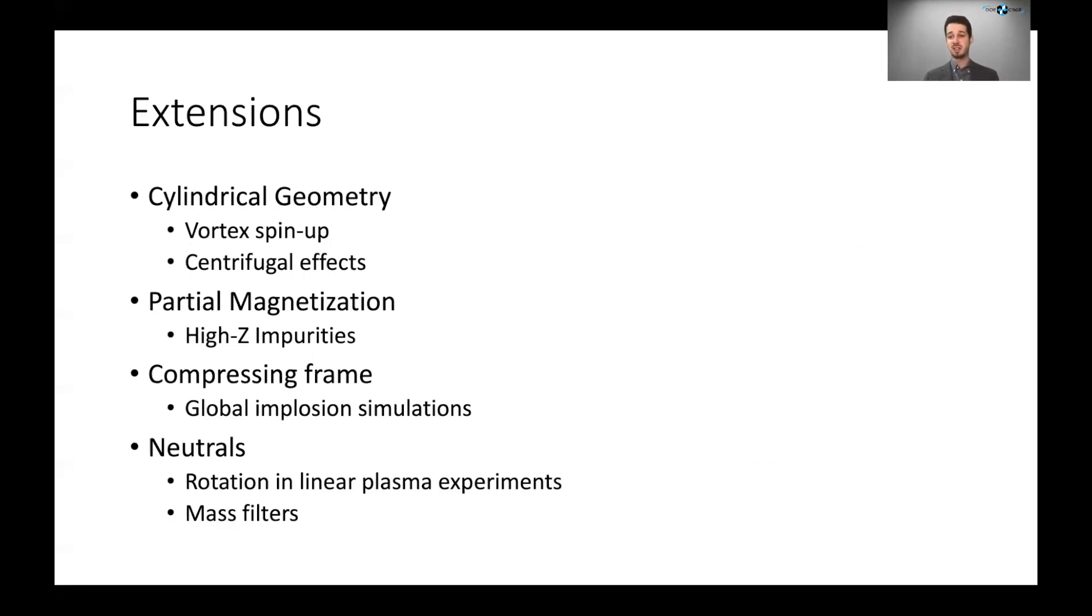We're also looking at extending the code in the cases of partial magnetization, where for instance, perhaps the fuel ions are magnetized, their Hall parameter is greater than one, but your really high Z impurities that are coming in from your liner might not be magnetized. And what happens in that case in terms of where the thermal friction pushes those impurities. That's work we're very curious about and looking into now.